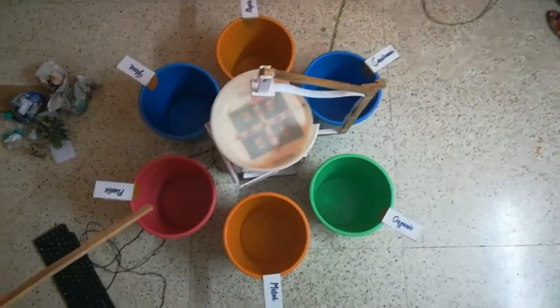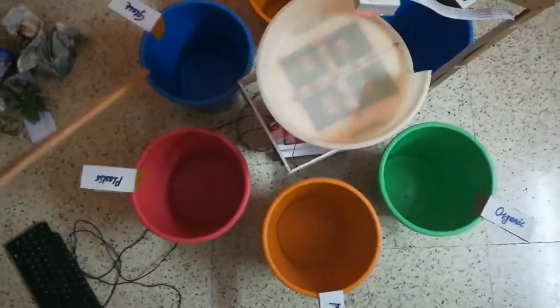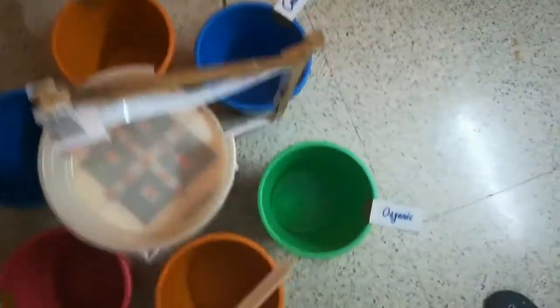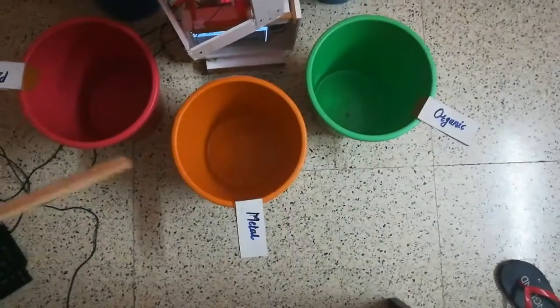Here we can see the garbage bins: plastic, glass, paper, cardboard, organic, and metal. These are the six classes.